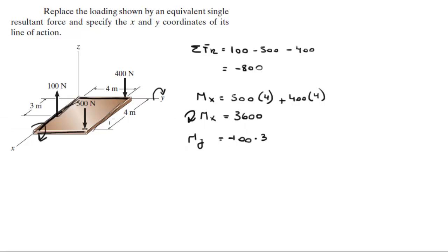So let's call this one negative since it's turning it clockwise, so it's negative 100 times 3, plus 500 times 4. This comes out to be 1700 turning it this way.